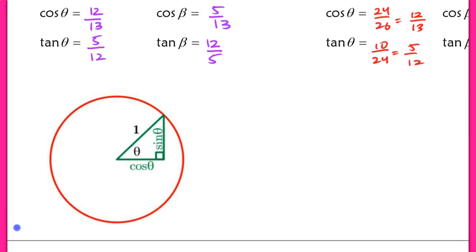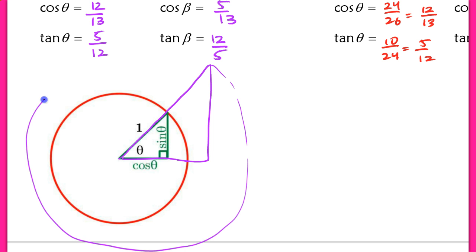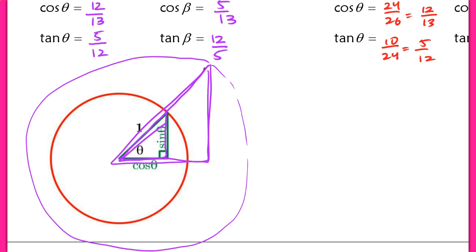Now that we know that two similar right triangles have the exact same trig values, I can look at my unit circle. Before, we only defined our trig values based off of our unit circle. But now we know that if I were to create a similar right triangle and enlarge this, despite the fact that my radius is not 1 in this particular circle, the sine, cosine, tangent, and reciprocal function values will all be the same for the larger triangle too. So this is very powerful because now we're no longer limited to just our unit circle.